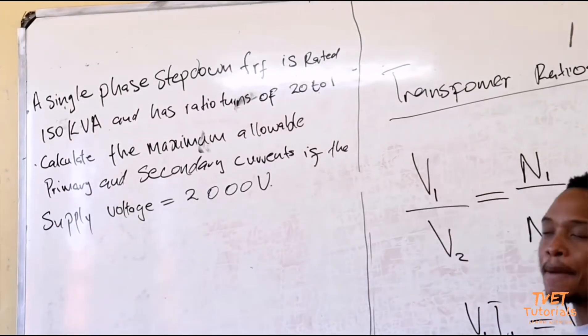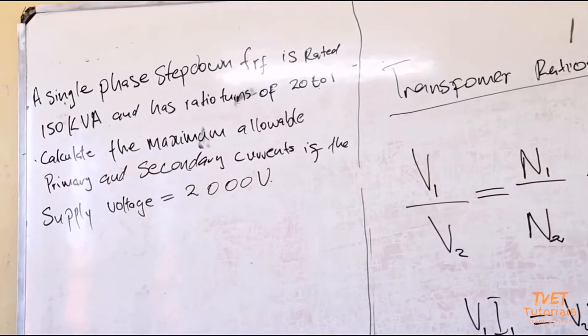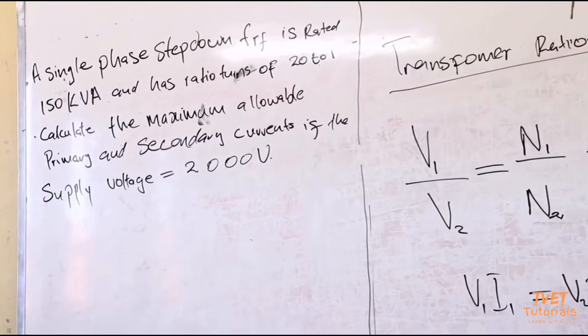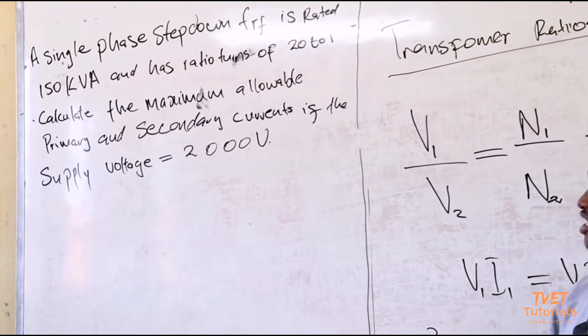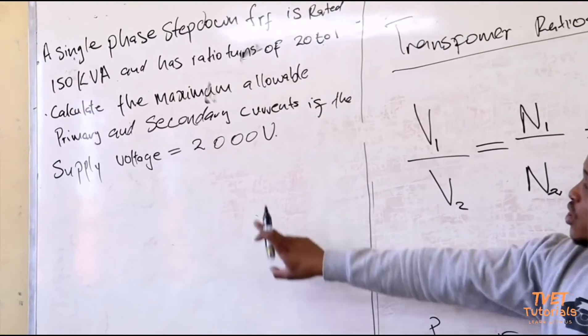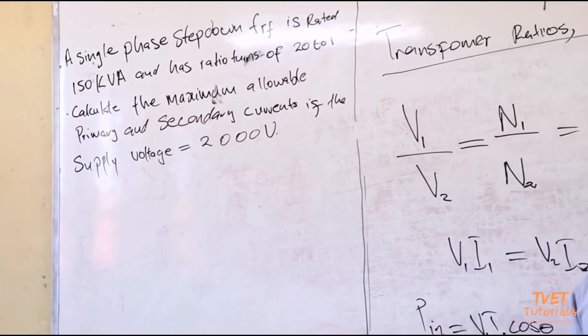And the question is to calculate the maximum allowable primary and secondary currents if the supply voltage is equal to 2000 volts.